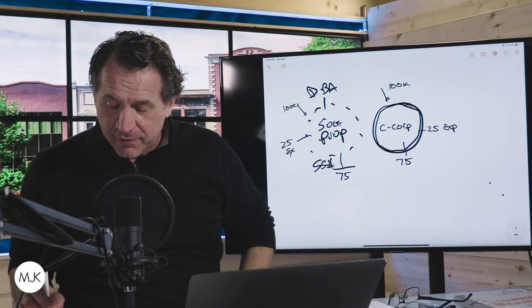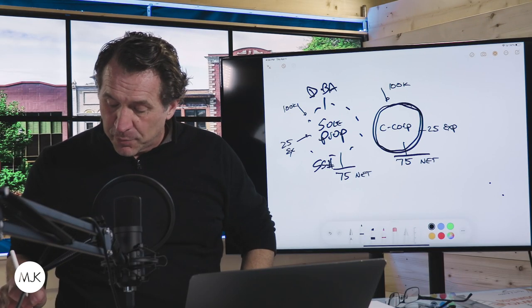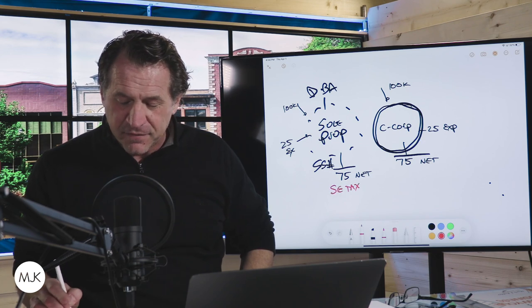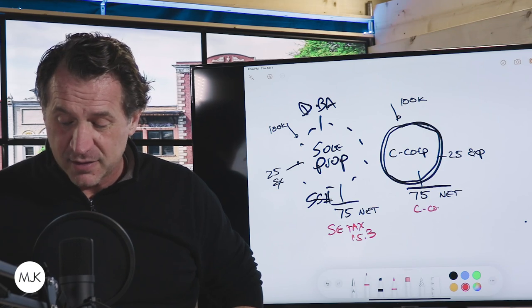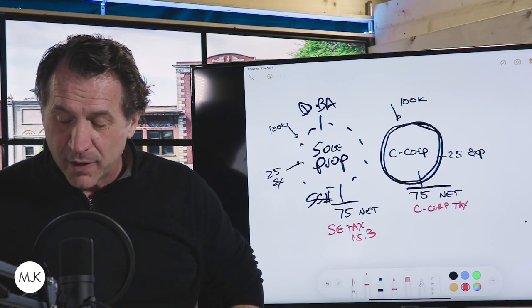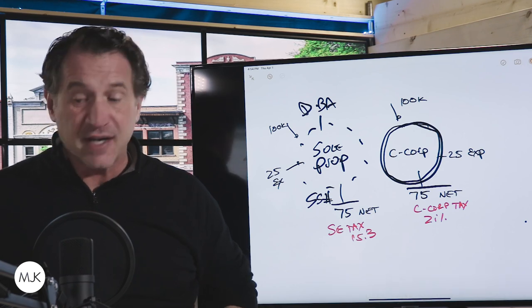So you net 75. Well, here's the problem. In a sole proprietor, you pay self-employment tax of 15.3%. In a C-corp, you pay corporate tax of 21%. So both of these suck.